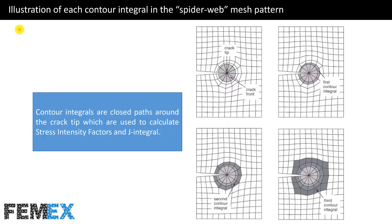Now I want to talk about illustration of each contour integral in the spiderweb mesh pattern. Here we have the spiderweb mesh pattern. Contour integrals are closed paths around the crack-tip which are used to calculate stress intensity factors and J-integral. This is the first contour integral, this line is the second contour integral, and this line is the third contour integral.